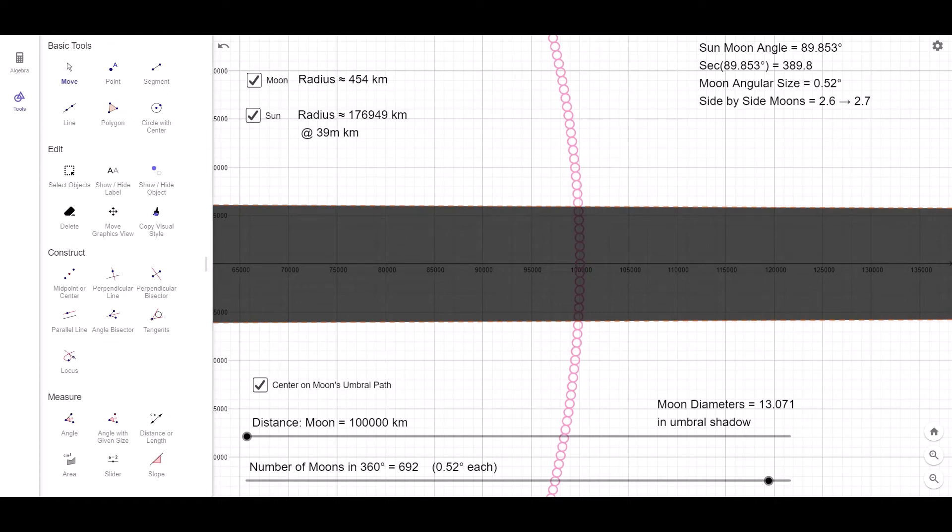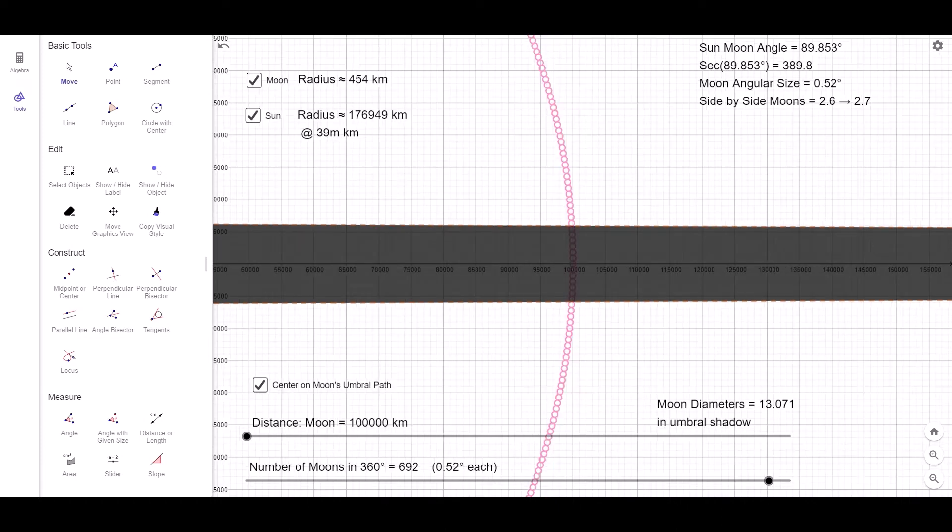The last step involves changing the moon's orbital distance around the Earth. Increasing it means the Sun and the Moon get larger while the Sun moves further away. So when I move the slider, this number will change. And I'm aiming for just under 2.7.